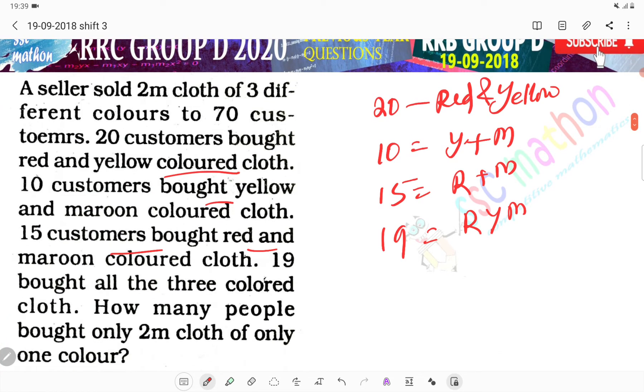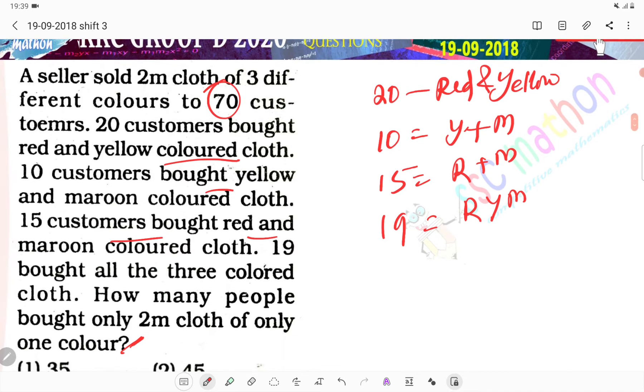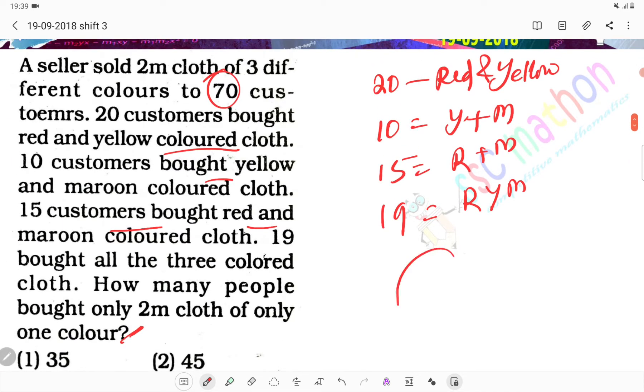This question is very interesting. 70 customers bought cloth. You can do this with a Venn diagram. Yes sir, we can. How will we do it? Let's first draw three circles.